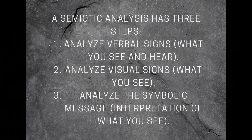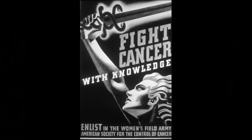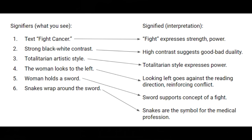A semiotic analysis has three steps: analyze verbal signs — what you see and hear; analyze visual signs — what you see; and analyze the symbolic message — the interpretation of what you see. Let's take the example of a historical fight cancer ad. A semiotic analysis would reveal the signifiers — what you see: the text, the image, the design — and the signified, which is the interpretation.